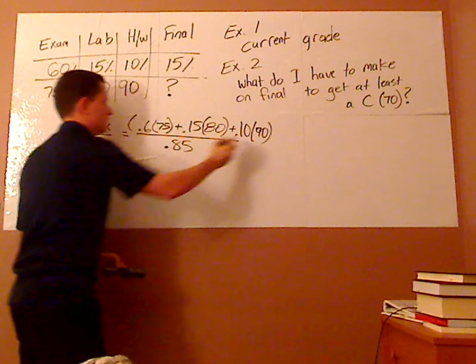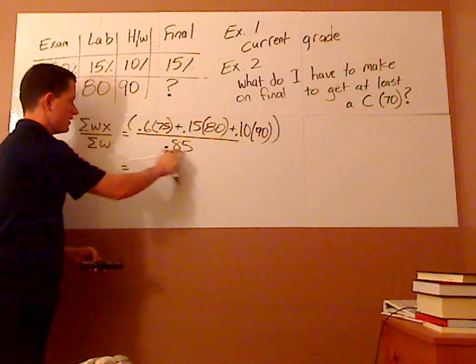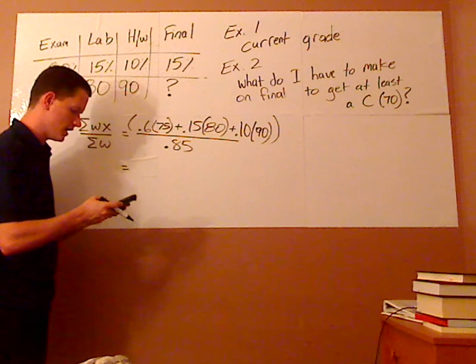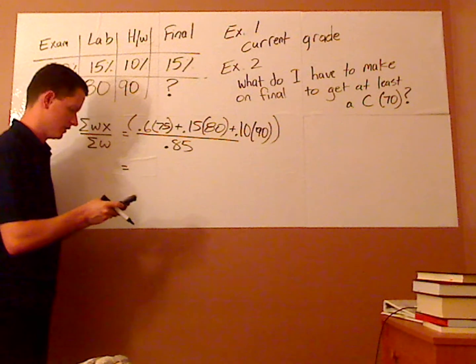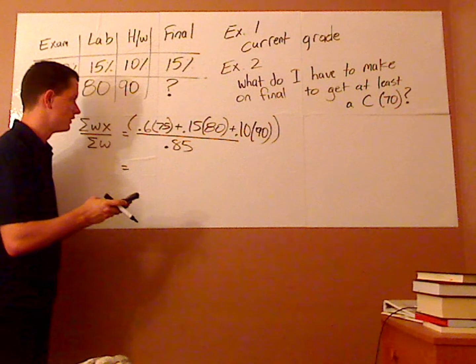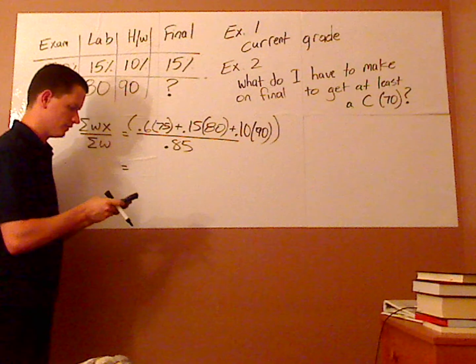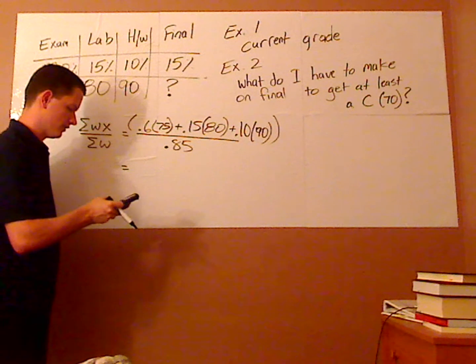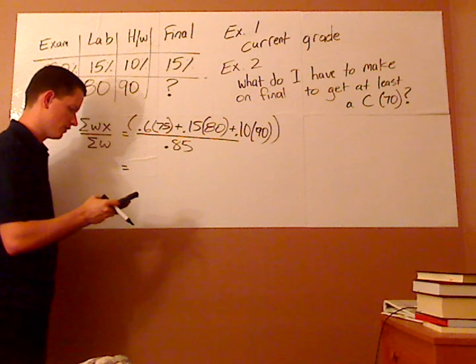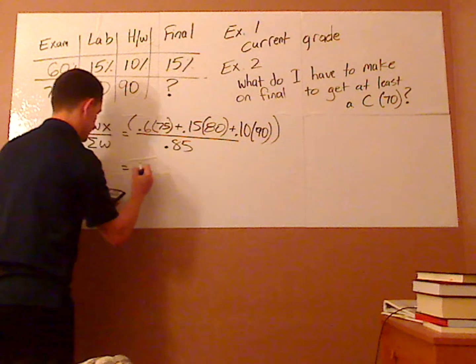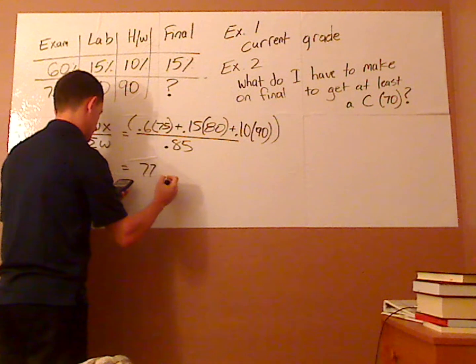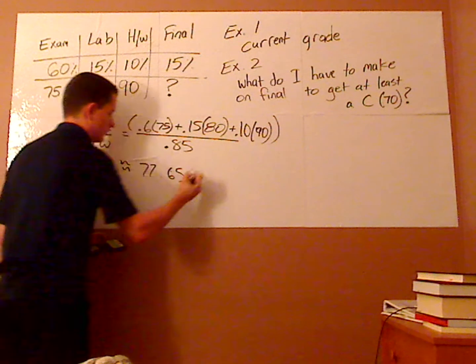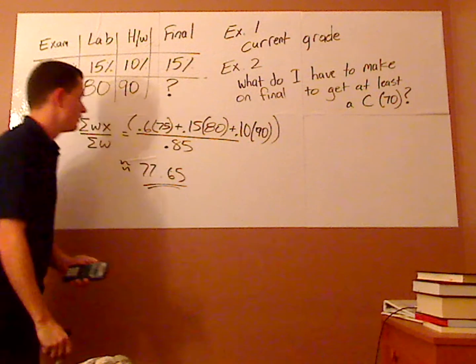So, I'm just going to put parentheses around this whole thing, and just put it in the numerator, and then put it in the denominator. So, that's parentheses, 0.6 times 75, plus 0.15 times 80, plus 0.10 times 90. And then, make sure I have my parentheses in there, and then divide it by 0.85, and that gives me 75.65, and I'm rounding. So, it's approximately that. So, it's about 77.